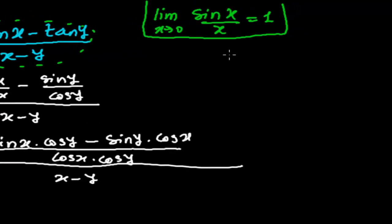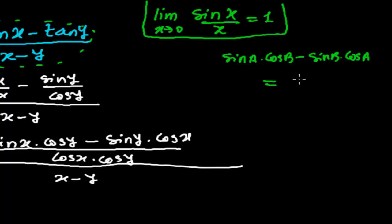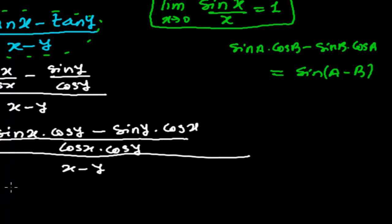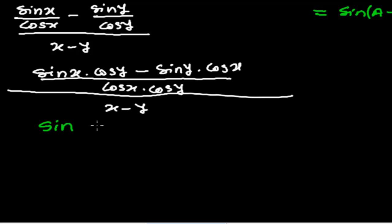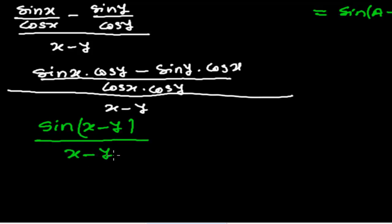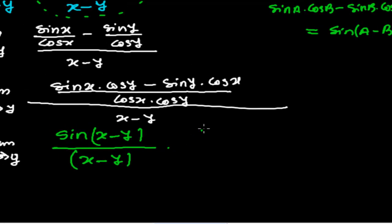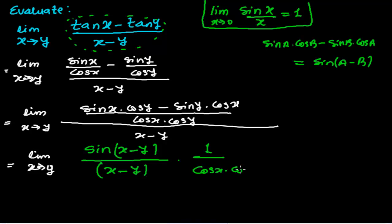Now, notice that sin x cos y minus sin y cos x matches the identity sin(a − b) = sin a cos b − sin b cos a. So the numerator sin x cos y − sin y cos x is simply sin(x − y). This gives us sin(x − y) divided by x minus y, times 1 upon cos x times cos y.